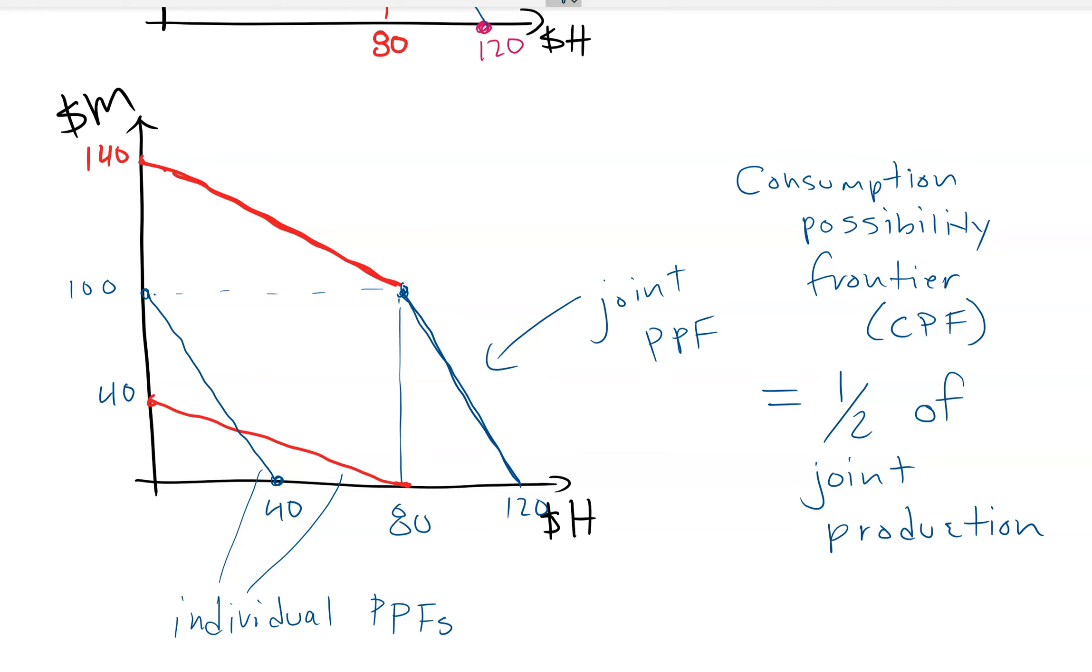So what I do is I'm just going to translate this joint PPF, and I'm going to translate half of it. So this is halfway in between these two. This is 70, that's half of 140. And this is half of 120, so that's 60.